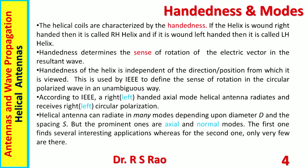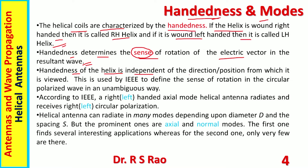A few points regarding the structure: handedness and modes. Helical coils are characterized by handedness. If the helix is wound right-handed it is called a right-hand helix; if wound left-handed it is called a left-hand helix. Handedness determines the sense of rotation of the electric vector in the resultant wave. The sense of the electric vector in the wave is determined by the handedness of the coil. Handedness of the helix is independent of the direction or position from which it is viewed, and this is used by IEEE to define the sense of rotation in a circularly polarized wave in an unambiguous way.